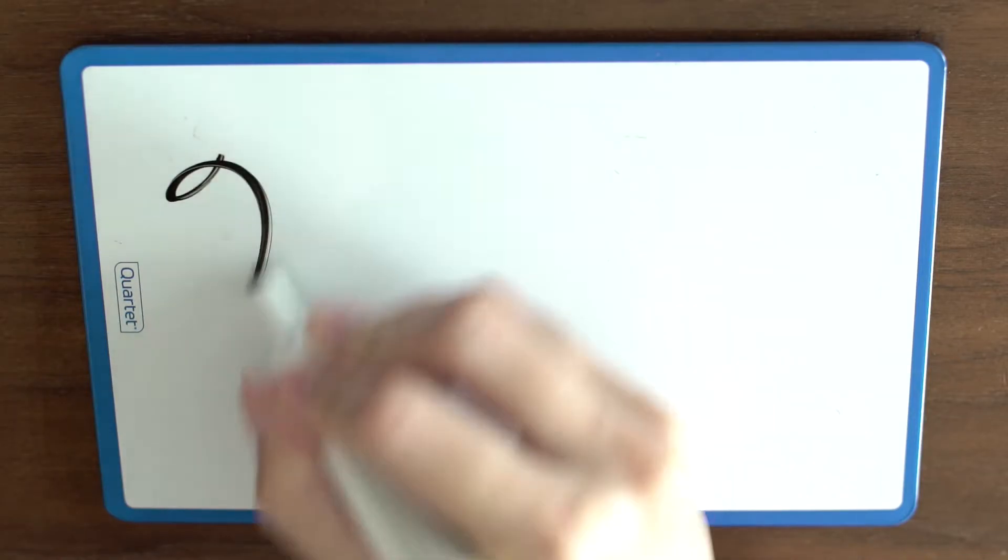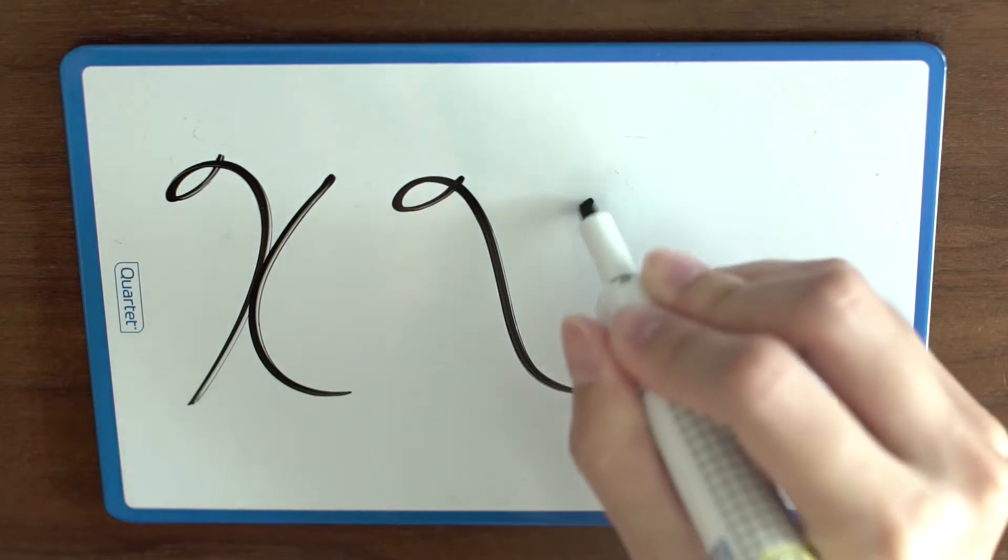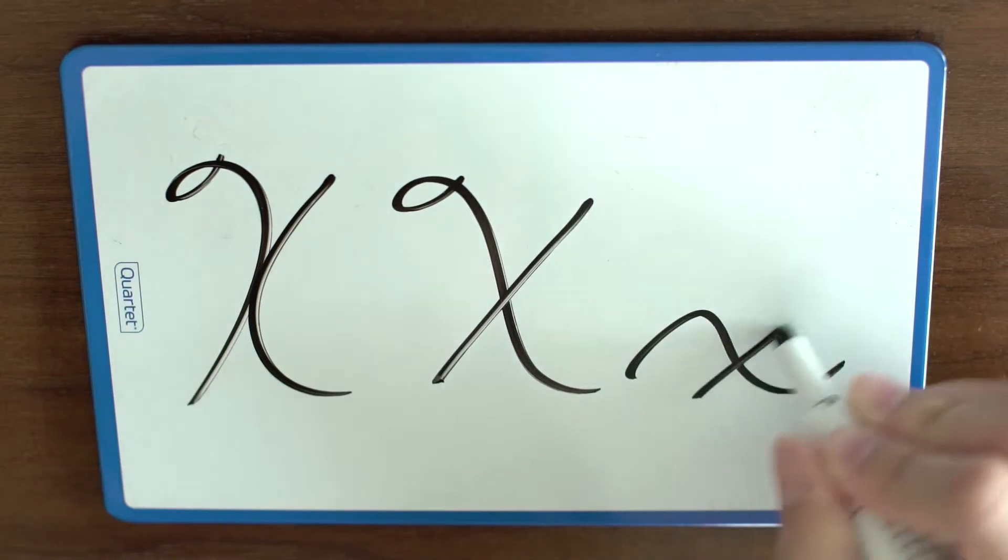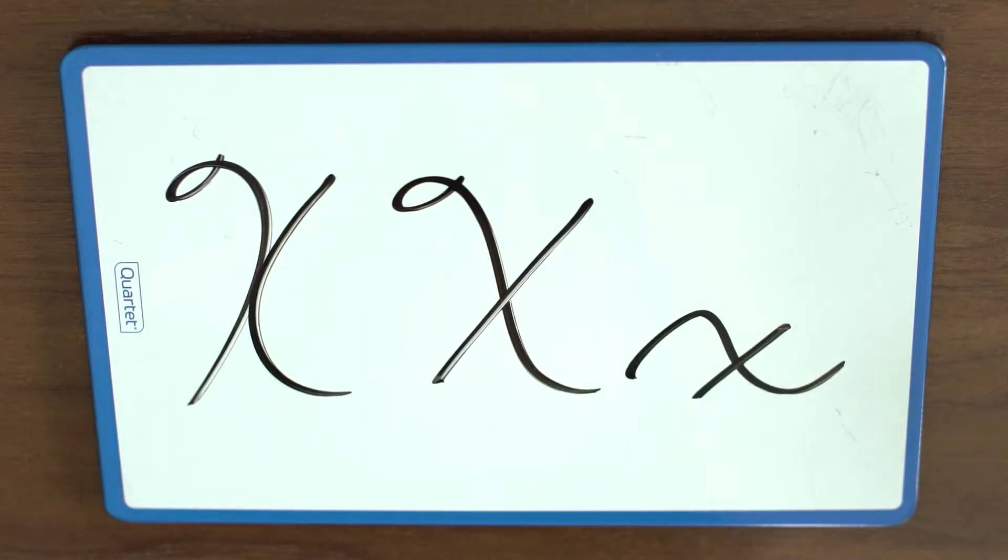The letter X is funny because when I first learned the capital X, it was the one in the middle. Years later, it was supposedly wrong and they taught me the one on the left. Now, I use the one on the left more just because connecting letters is much easier.